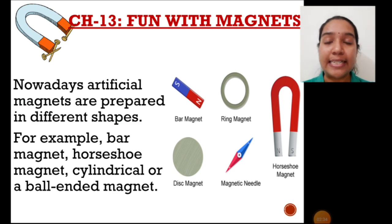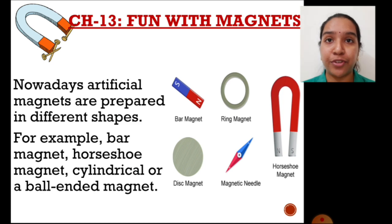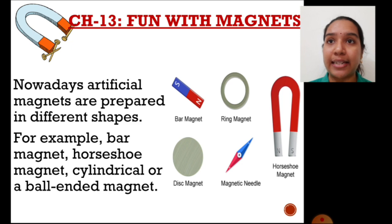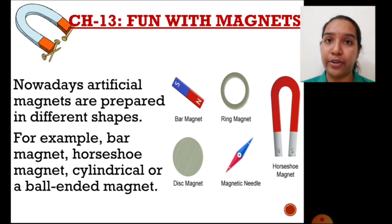As we already discussed in the previous class, artificial magnets are made in different shapes. You can see them in the images here. They may be of different shapes — like a straight one called the bar magnet, a horseshoe magnet which is U-shaped, cylindrical or ball-ended magnets, a ring magnet, disc magnet, needle-shaped magnetic needle, etc. These shapes of artificially made magnets are available to fit the purpose.